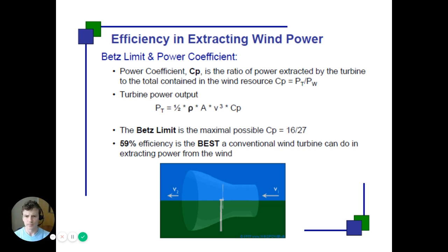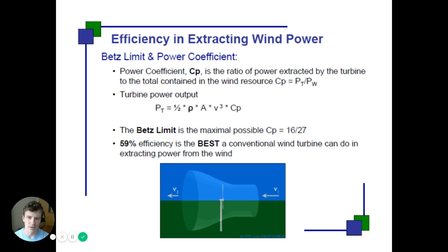For wind power, there's something called the Betz limit — the actual maximum possible power coefficient describing how much of the kinetic energy embedded in moving air can be converted to electrical energy. That upper limit is about 60 percent. So roughly 60 percent of the theoretical energy in moving air is the maximum we can convert to electricity using a wind turbine.